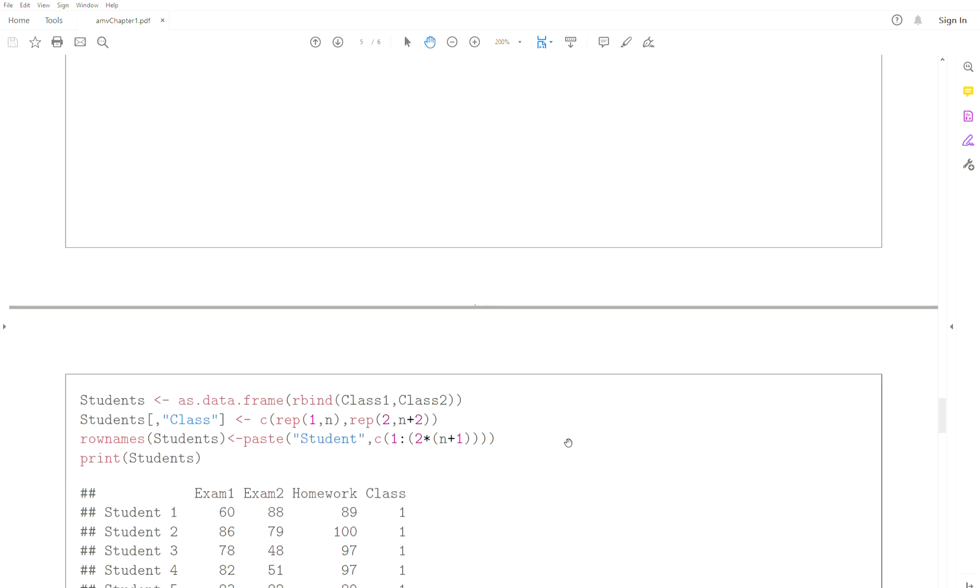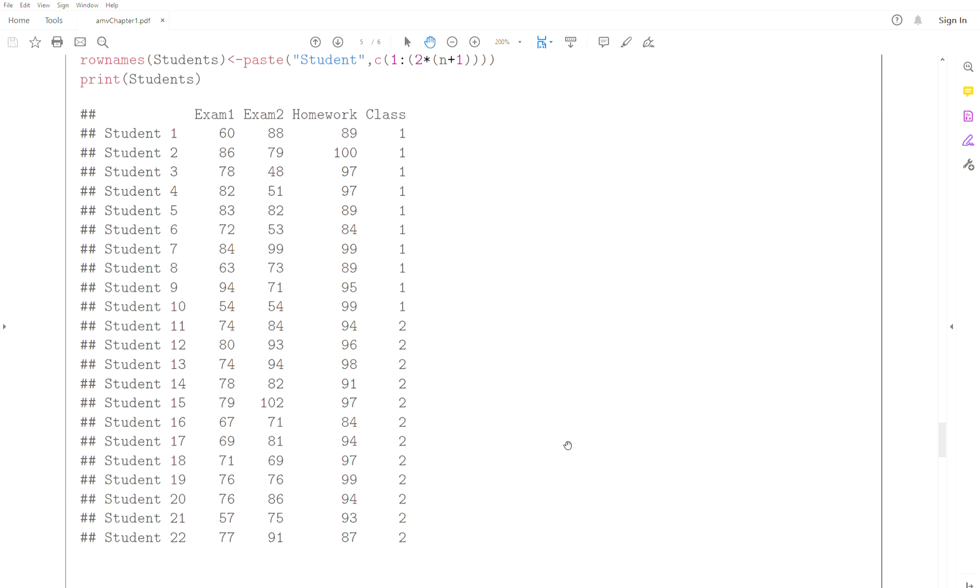And so it would look more like this. So we just store all the information in one object called students, and this is it. So this is a data frame using our terminology, or data matrix using multivariate analysis nomenclature.